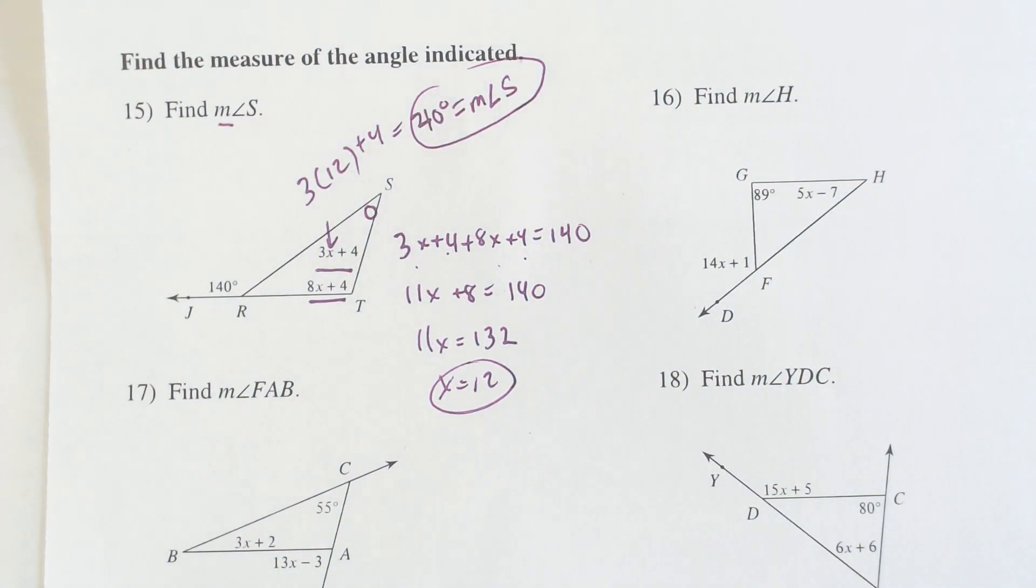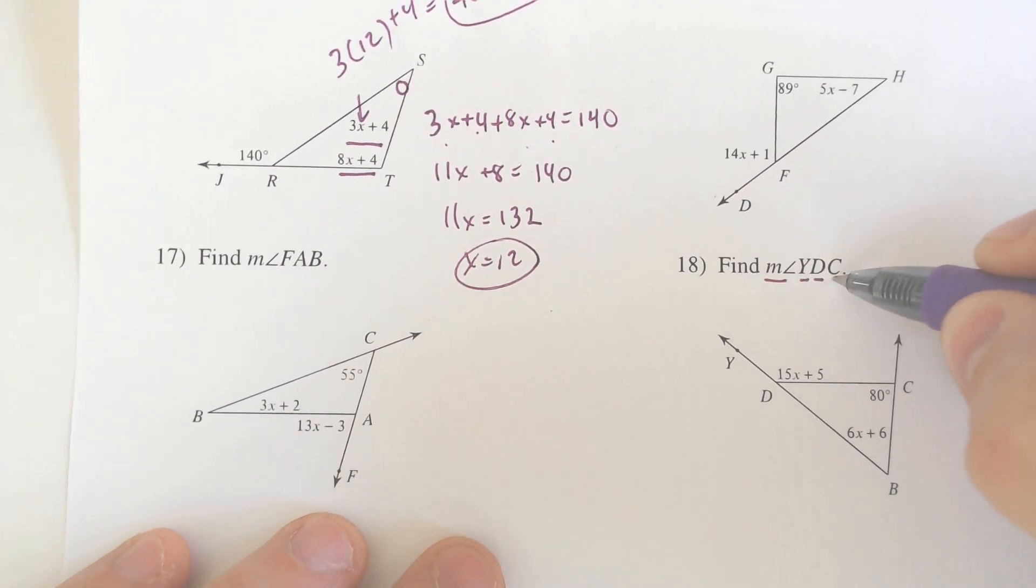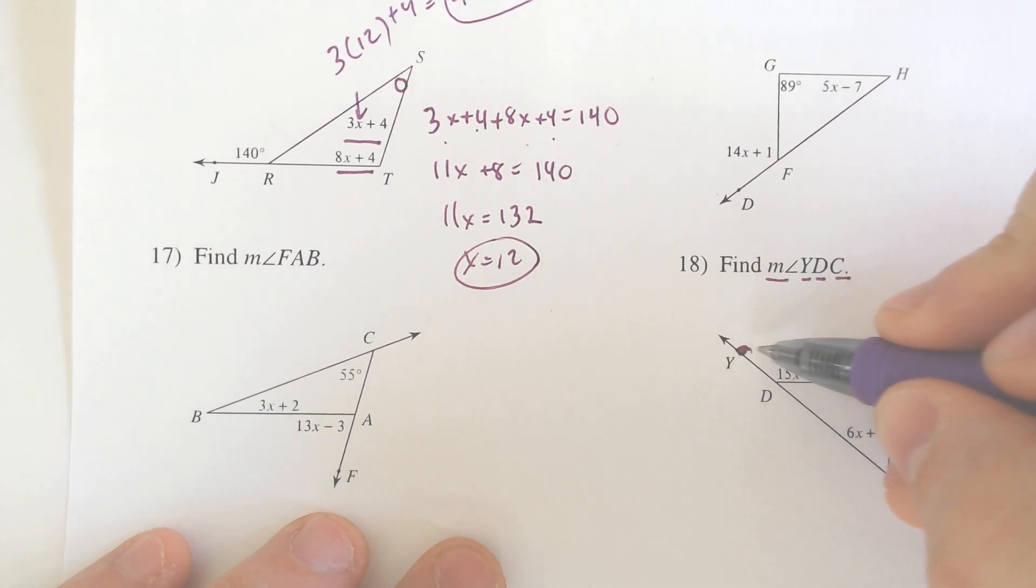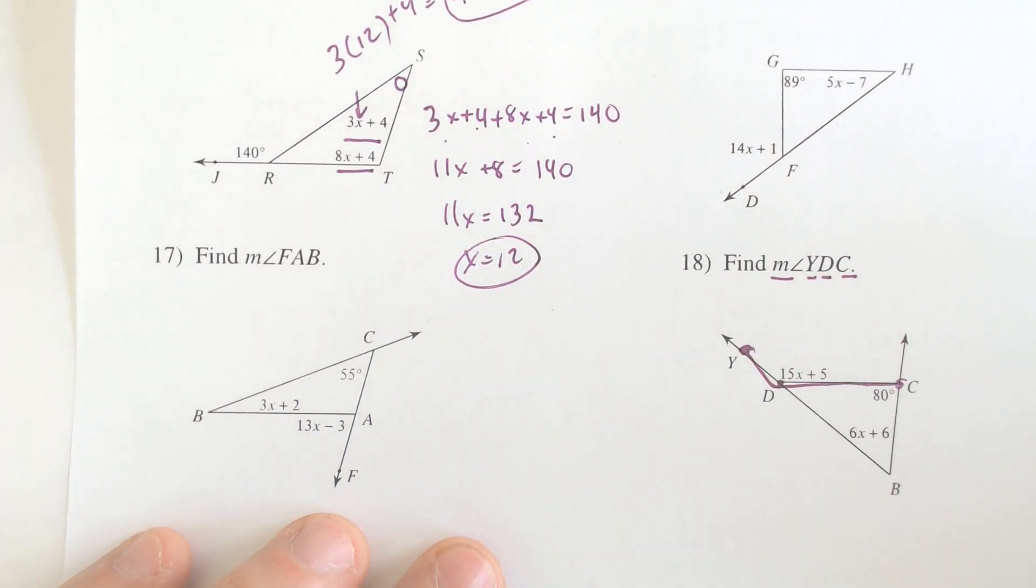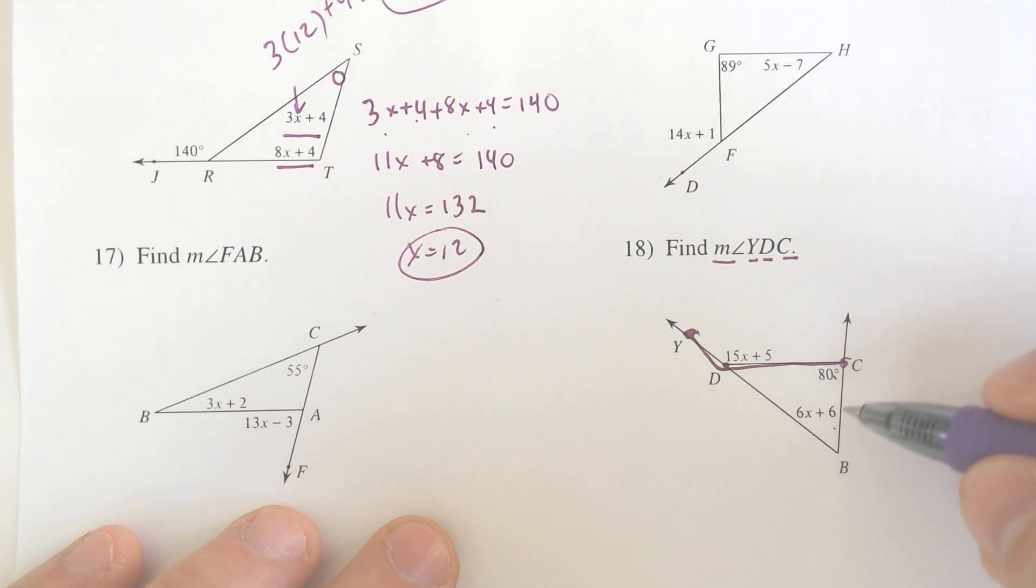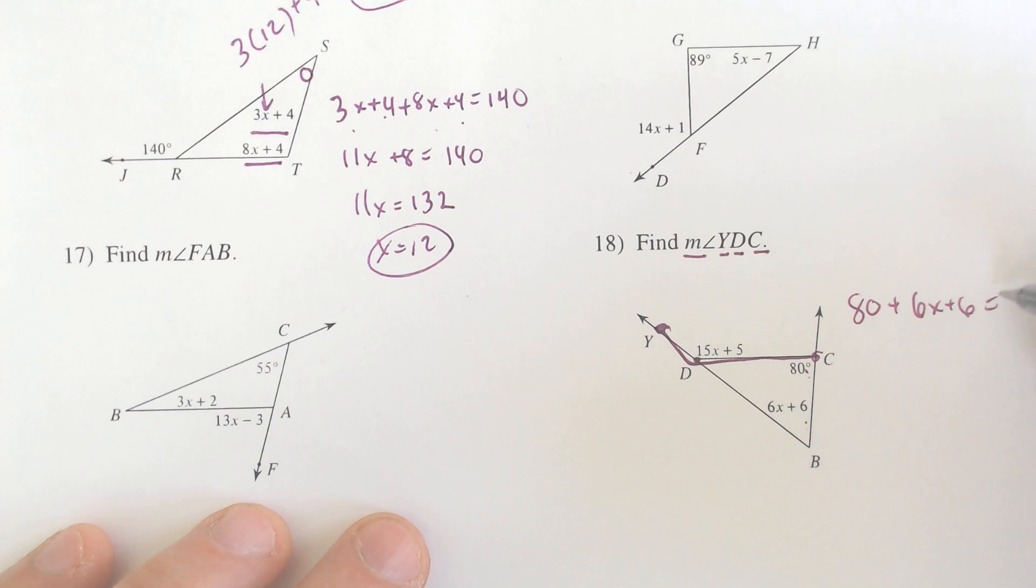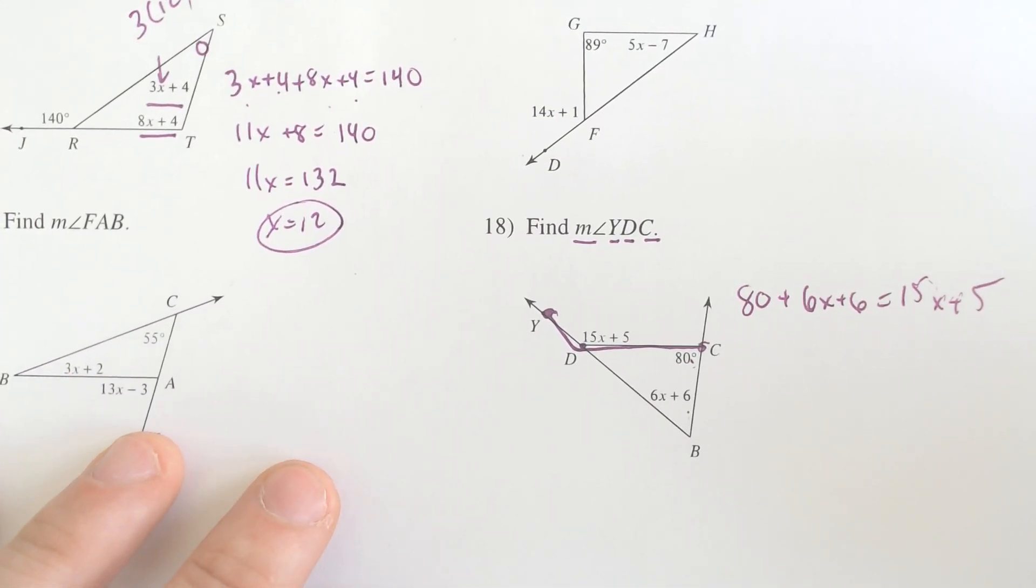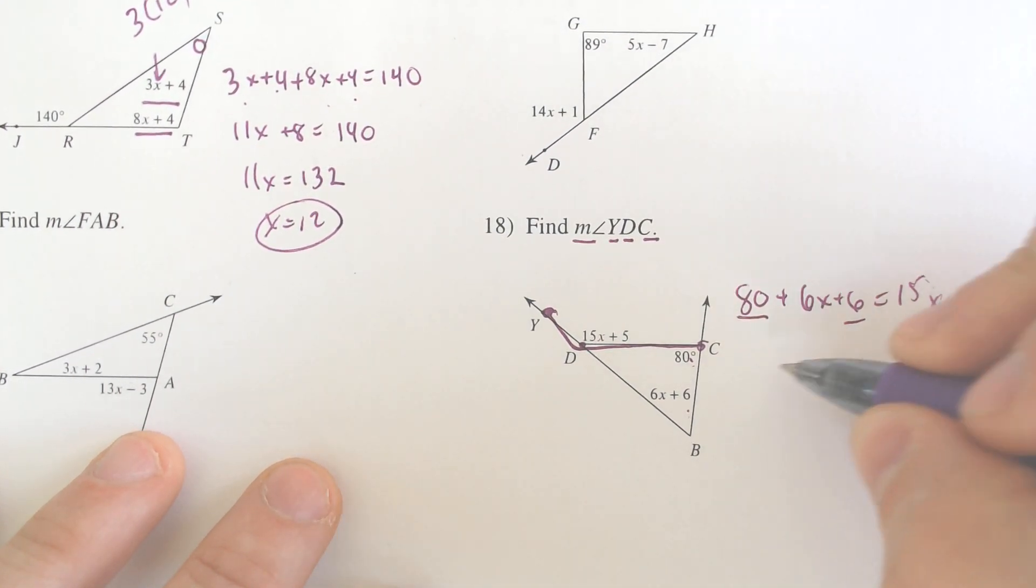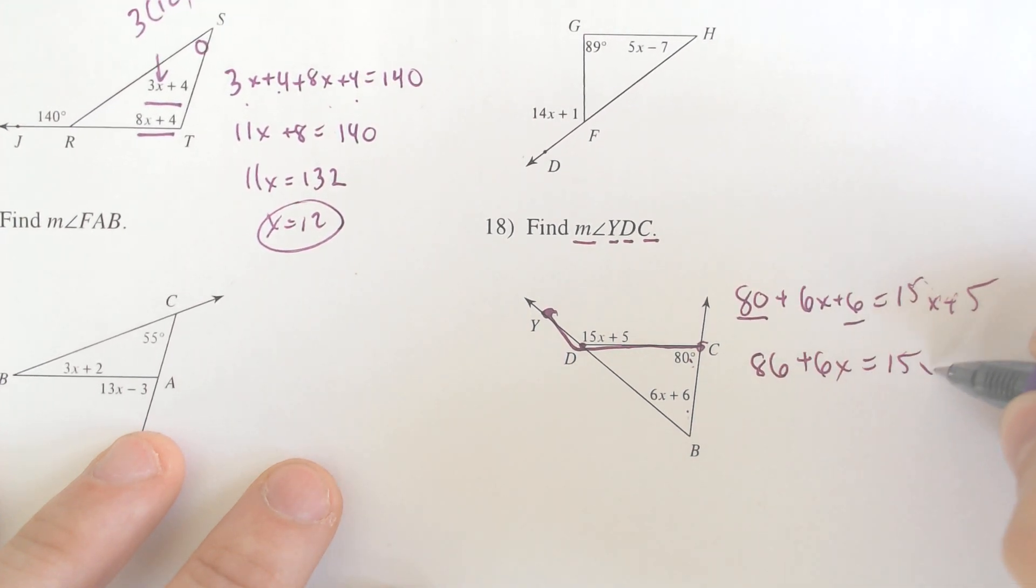What about if we wanted to find the measure of angle YDC. We are looking for the angle where the 15x plus 5 is. So we have these two interior angles. Guess what they do? They add to equal the exterior one. So we got 80 plus 6x plus 6 equals 15x plus 5. Combine any like terms we got. We got 80, we got 6, we got 86 plus 6x equals 15x plus 5.